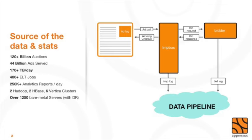I'd like to share some stats so you understand the scale of our operations, and then we'll dive into the platform and architecture. Every day, we auction off about 120 billion ads. When you load your favorite blog, in a fraction of a second before the page loads, we take all the information about the site and the user, run an auction, and the winning bidder gets shown. This happens 120 billion times a day.